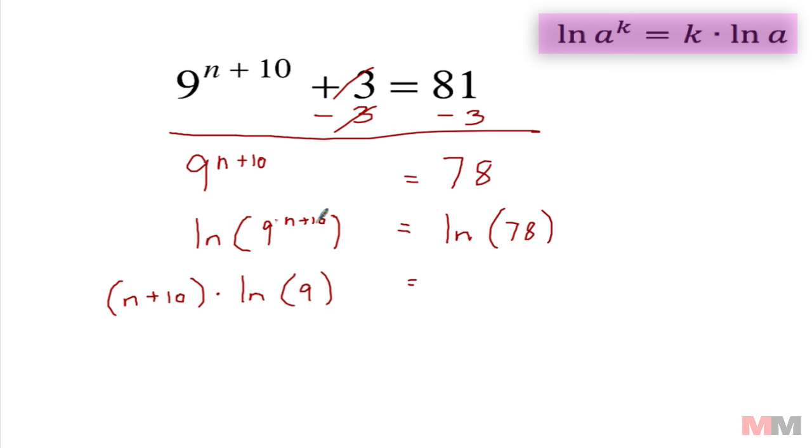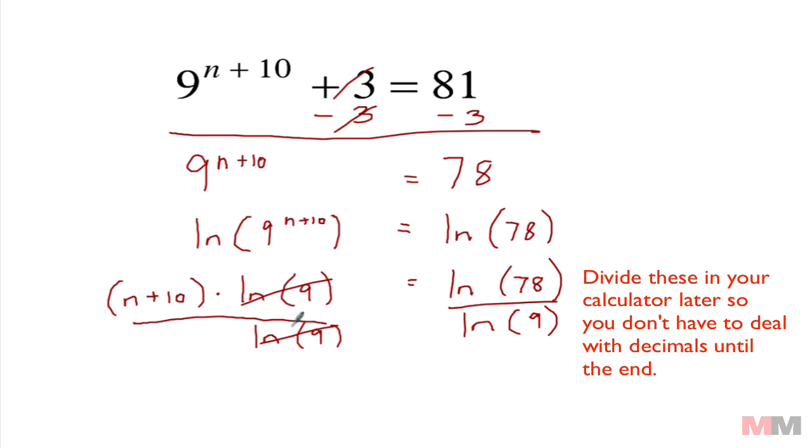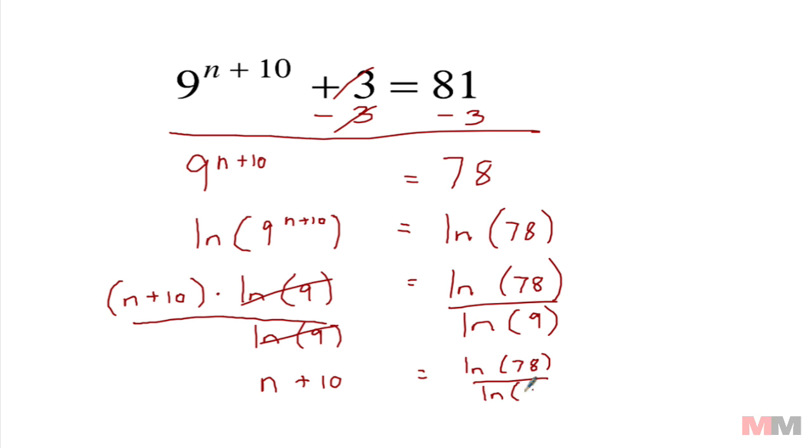These two mean the same thing, remember just look at this property, equals the natural log of 78. From here I don't want to distribute this, I want to get rid of this right away. I can take that and divide it to both sides, so this would cancel off on the left. Now I'm left with n plus 10.